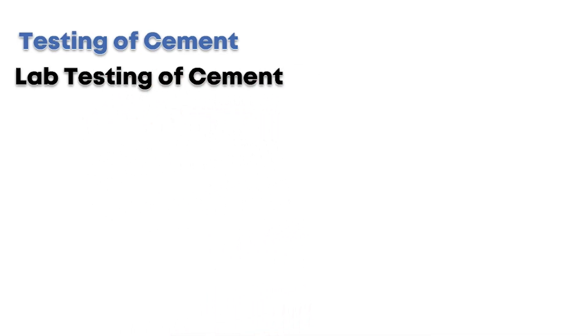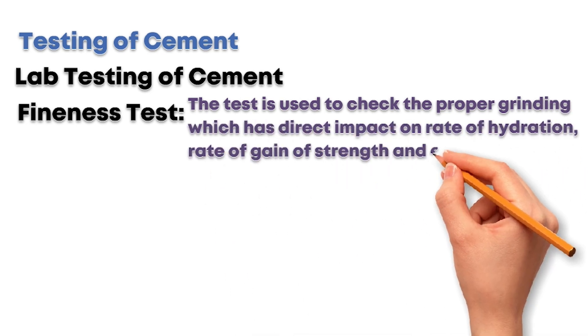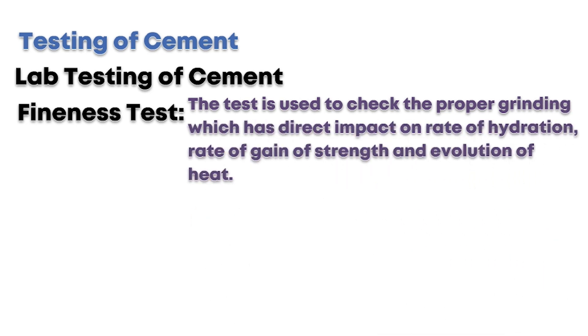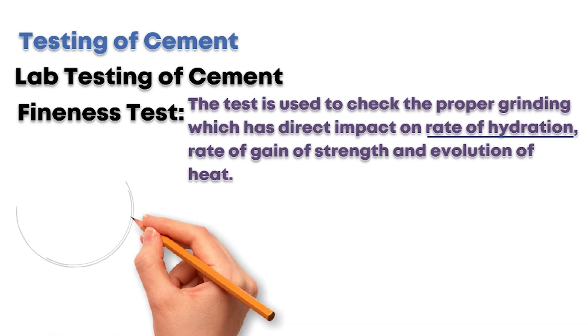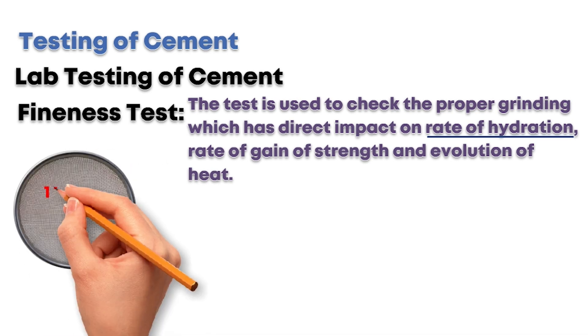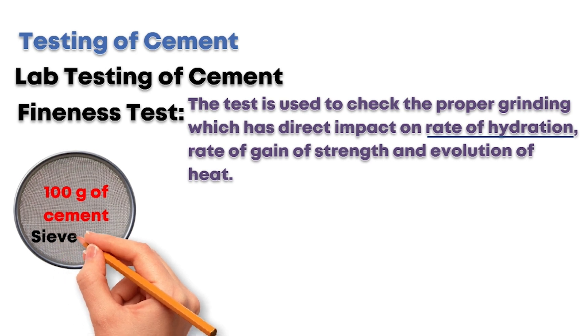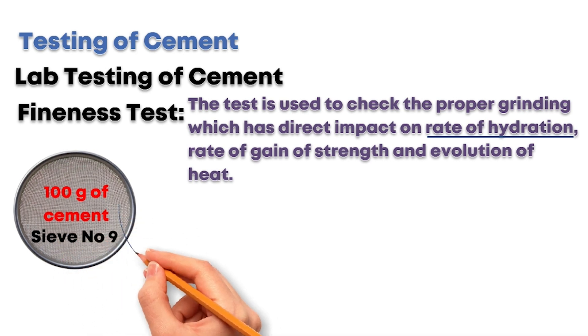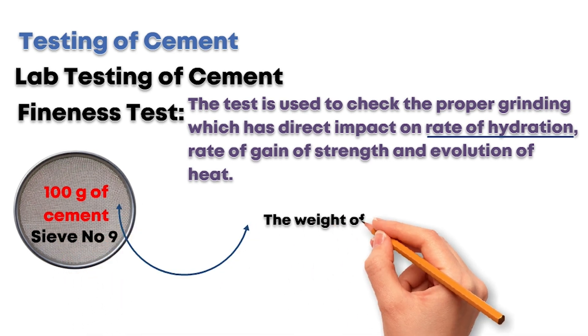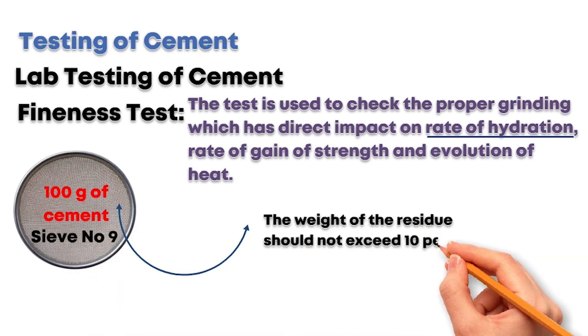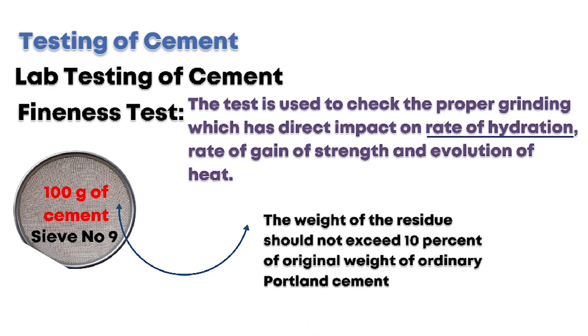Now let's discuss the lab test of the cement. This includes the fineness test. The test is used to check the proper grinding which has direct impact on rate of hydration, rate of gain of strength, and evolution of heat. Sieve test: take 100g of cement and place it on a sieve, then perform sieving for 15 minutes. The final results demonstrate that the weight of the residue should not exceed 10% of the original weight of ordinary Portland cement.